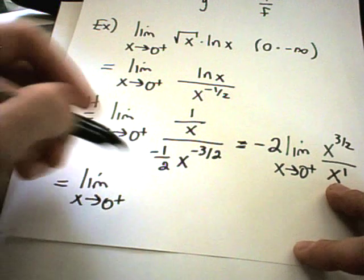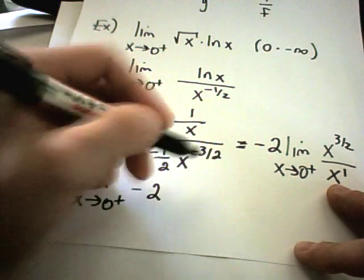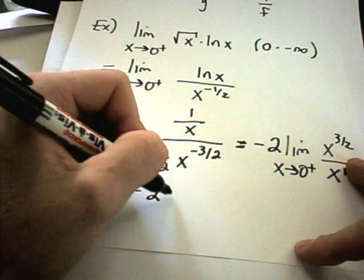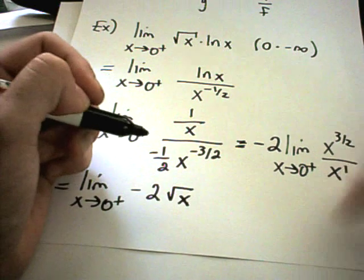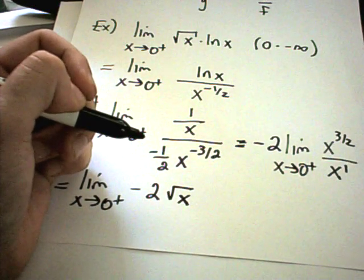When I put that back in there, I'll have negative 2. And I'll be left with square root of x. So I'll have x to the 1/2 when I simplify that part down.